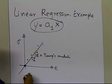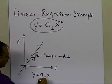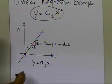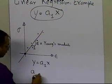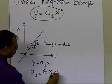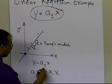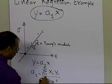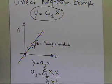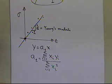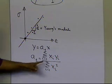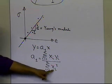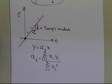When y equals a1·x is the regression model and we're given data points x1, y1, x2, y2, and so forth, then a1 is nothing but the summation of the multiplication of the x and y values from i equals 1 to n, divided by the summation of the x values squared from 1 to n. So all we have to do is multiply each x value with the y value, add them up, square each x value, add them up, and that gives us the value of a1.